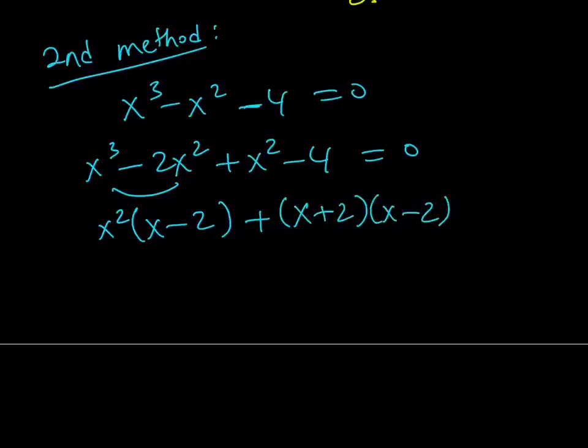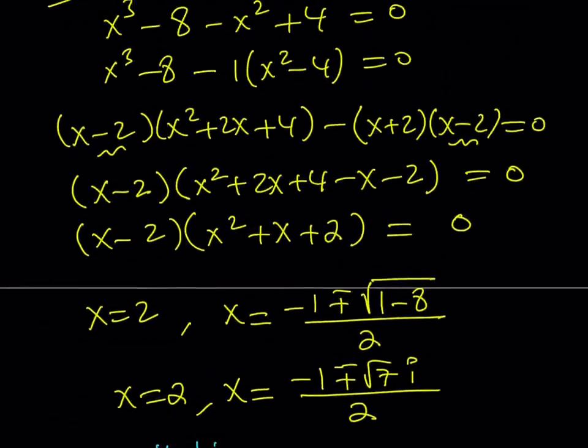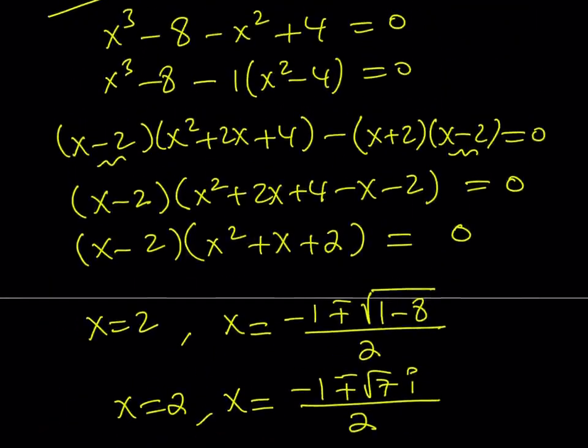The same difference of two squares came up in both methods, but notice that the first one had a minus sign in front of it. That's why they are different.